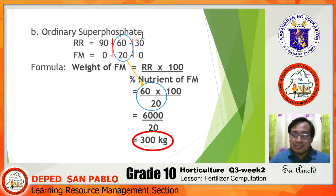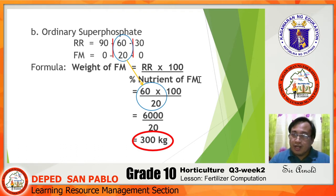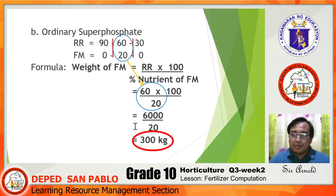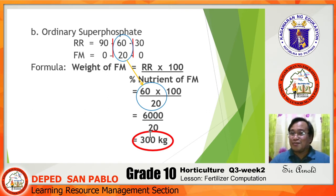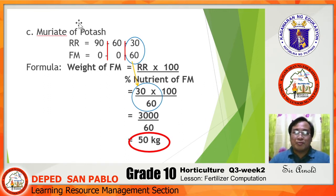Next, compute the ordinary superphosphate. The RR is 90-60-30 and the ordinary superphosphate is 0-20-0. We use the RR of 60 and the FM nutrient of 20. So: 60 times 100 equals 6,000, divided by 20, giving us 300 kilograms.